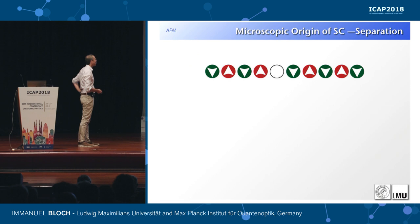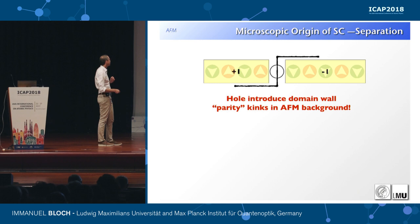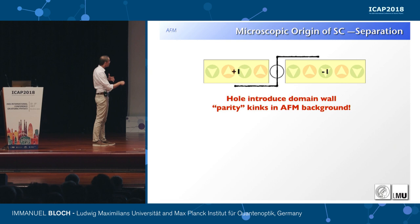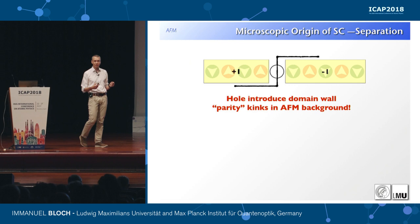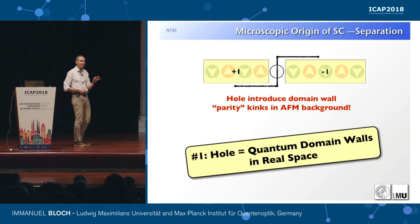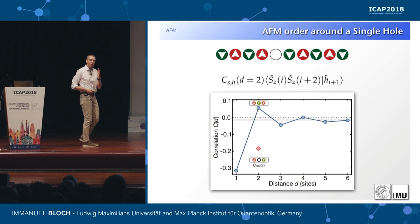The microscopic origin is the key lesson: if we put a hole into a 1D chain by doping, it is not a local excitation. It gives rise to strong collective behavior — we've removed a particle but also shifted the antiferromagnetic order by minus one in sign. The hole acts like a domain wall which flips the sign of the antiferromagnetic order, and it introduces parity kinks in the antiferromagnetic background. When you put holes in a 1D system, they act like quantum domain walls in real space and shift the whole antiferromagnetic order by a pi phase shift.